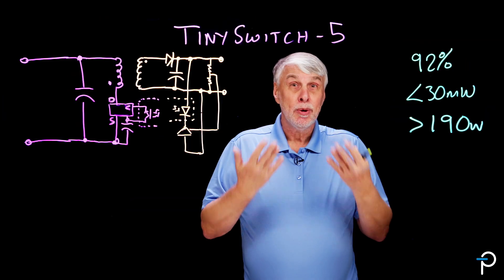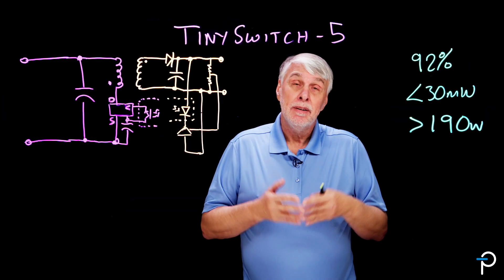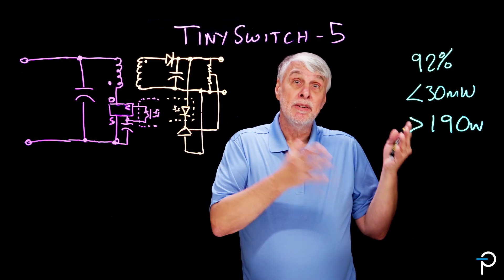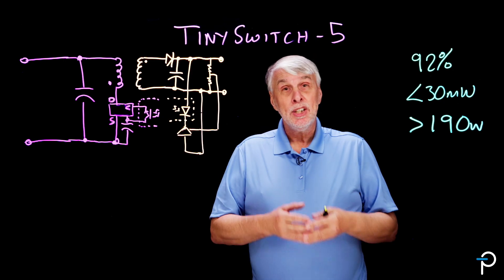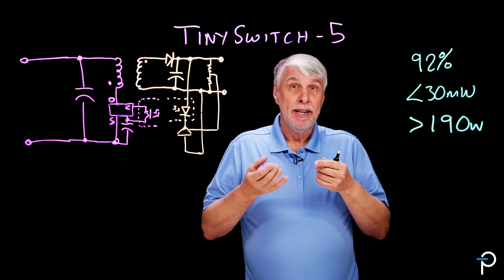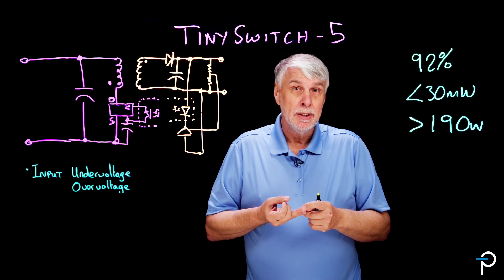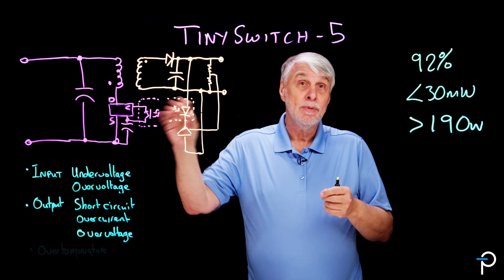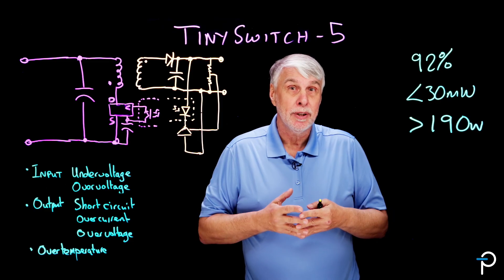As well as being able to offer very high full load efficiency, flat efficiency cross load, and very low no load power consumption in a device that can deliver up to 190 watts, TinySwitch-5 also adds additional protection features. We have input under-voltage and over-voltage protection, output short circuit over-current and over-voltage protection, and over-temperature protection, all built into the product family.